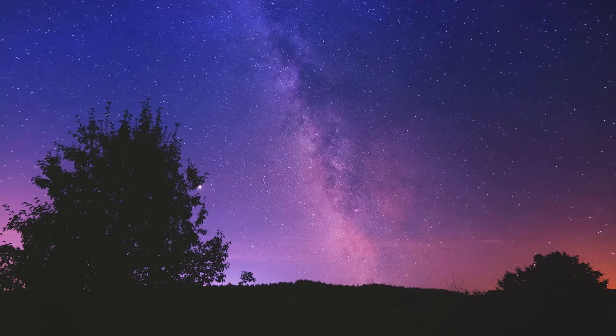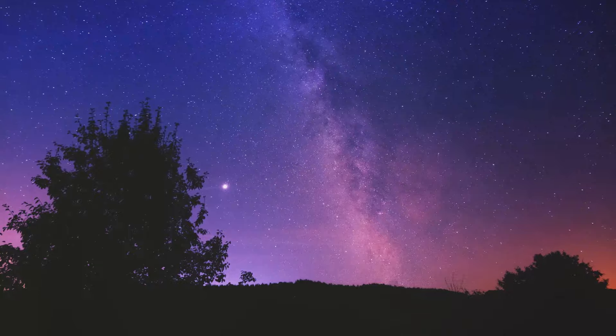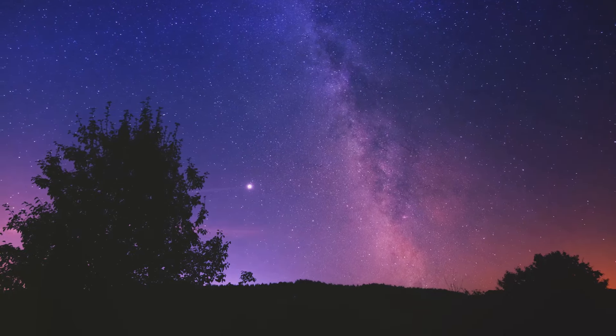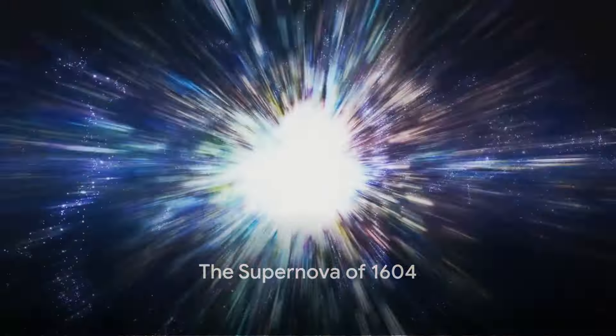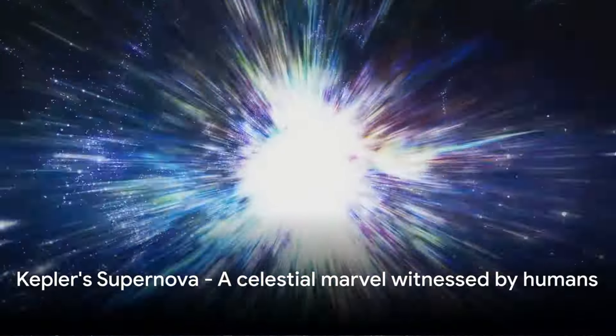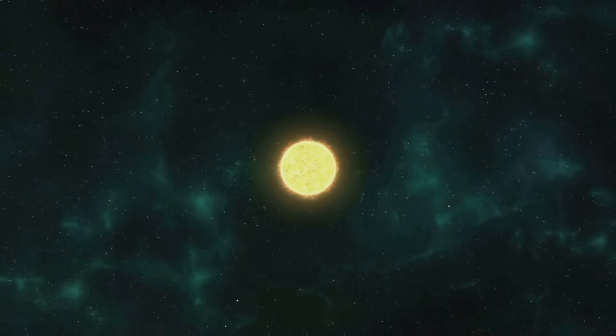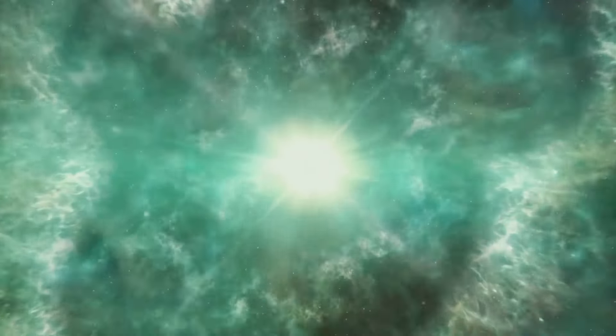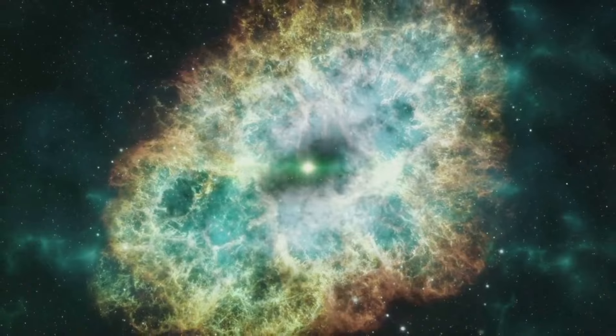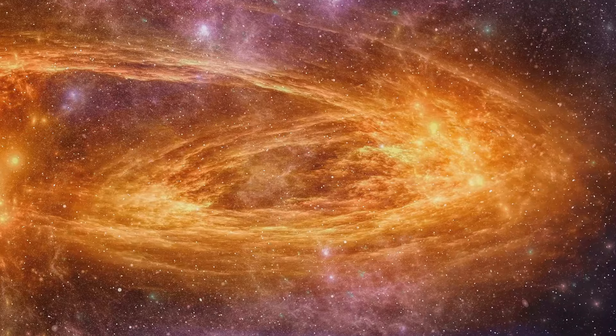The night sky, which we often take for granted, was about to put on a show that would be remembered for centuries. It was the year of 1604 and the night sky was about to reveal a spectacle like no other. The event in question is none other than the supernova of 1604, a celestial marvel also known as Kepler's supernova. This remarkable event took place in the constellation Ophiuchus, the serpent bearer.